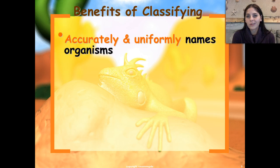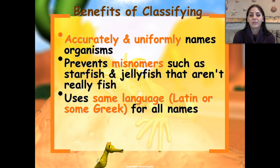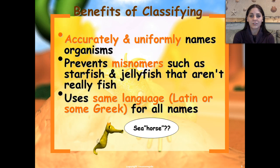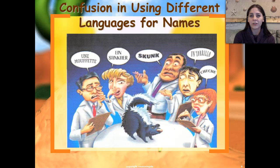So why would we want to classify organisms in the first place? It gives us an accurate and uniform way to name organisms, and it helps us prevent misnomers, such as a seahorse. Because a seahorse isn't really a horse, now is it? Just like a starfish isn't a fish, and a jellyfish isn't a fish. Starfish and jellyfish are invertebrates, and they're not fish at all. So it helps us to prevent confusion.